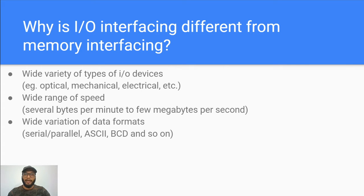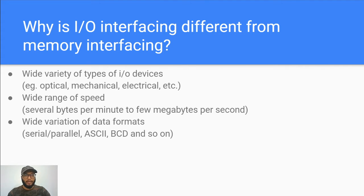Finally, there is wide variation of data formats. Some IO devices are inherently serial in nature — the data generated is bit by bit. For example, whenever you are receiving data from a telephone line or satellite, you are receiving it in serial form. We have to use serial-to-parallel and parallel-to-serial conversion to communicate with these IO devices. There are also differences in formats of data; we have to use different data types like numbers, characters and so on.